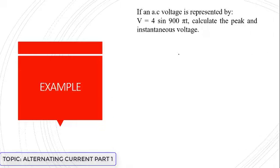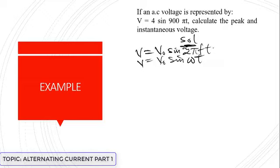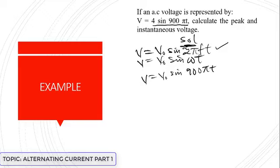Now let's find the answer to this question: an AC voltage is represented by v = 4 sin(900πt). We are asked to calculate the peak and instantaneous voltage. From our equations, we know v = v₀ sin(2πft). Comparing with the given equation, we can equate and identify the corresponding terms: v = v₀ sin(900πt).